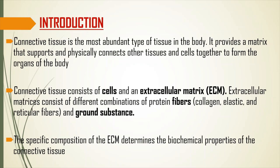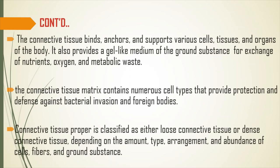Let's have a brief introduction on what connective tissue is. Connective tissue is the most abundant type of tissue in the body. It provides a matrix that supports and physically connects other tissues and cells together to form the organs of the body. Connective tissue consists of cells and extracellular matrix, denoted as ECM. The extracellular matrix consists of different combinations of protein fibers and ground substance.